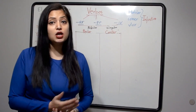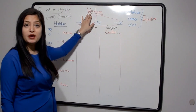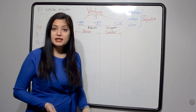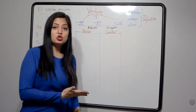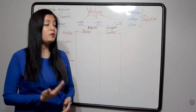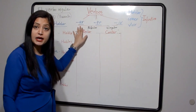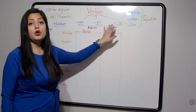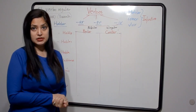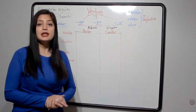So let us start with the concept of verbos. In Spanish, all verbs end in AR, ER, or IR. That means the infinitive form — the basic root form of the verb in Spanish — will always end in either AR, ER, or IR. The verb cannot have any other ending apart from these. And the verb can be regular or irregular.